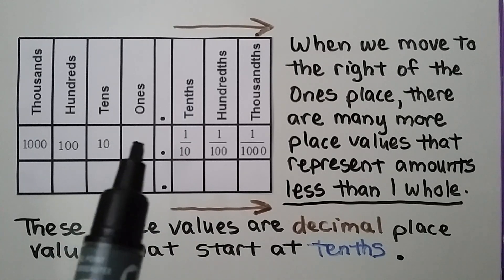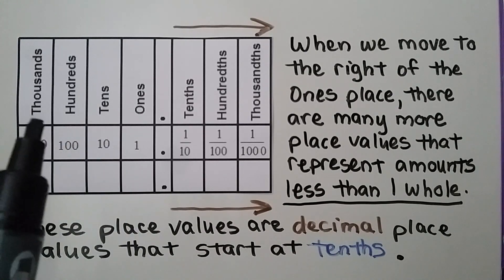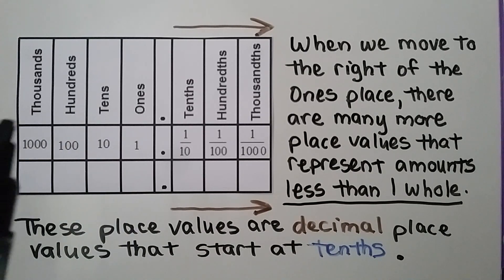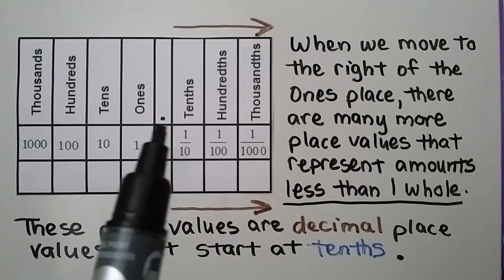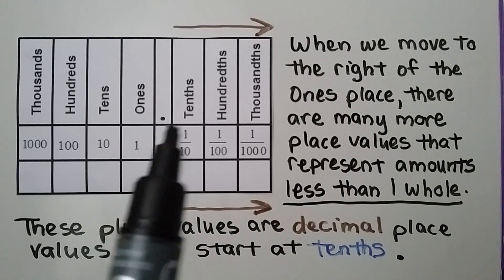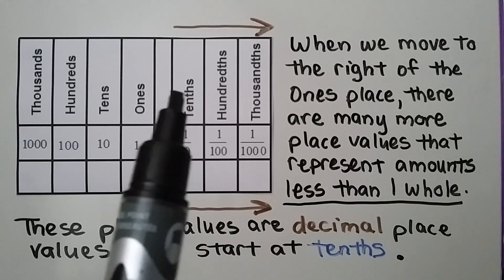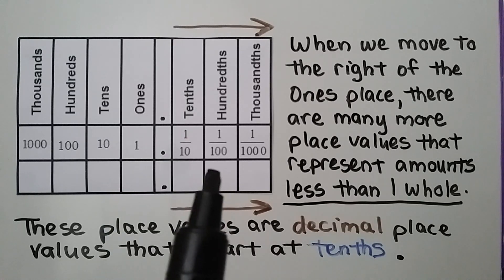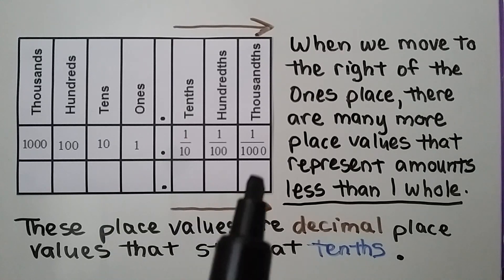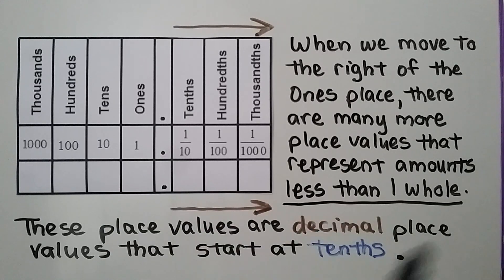We have our ones, tens, hundreds, and thousands that we're used to seeing. But here, to the right of the ones place is a decimal point. Then we have tenths — see how it ends with THS? We have hundredths, thousandths, and it keeps going.